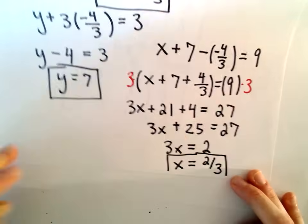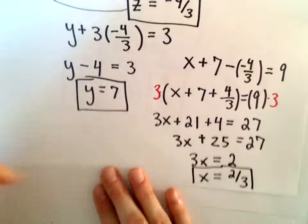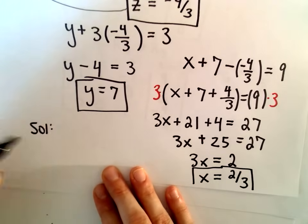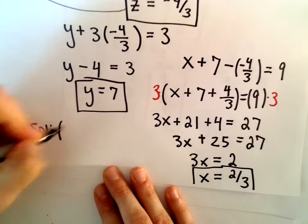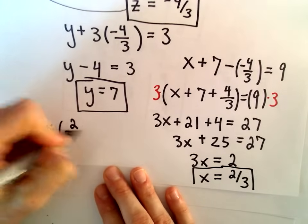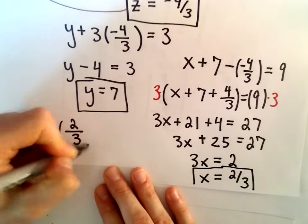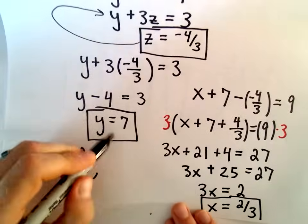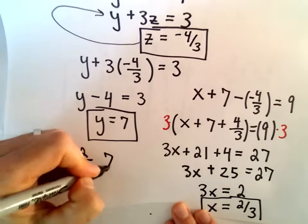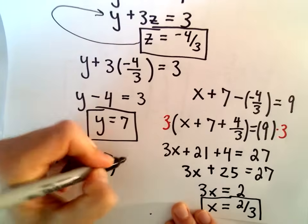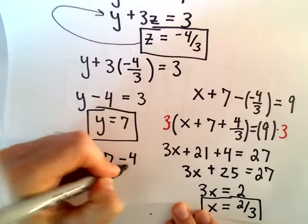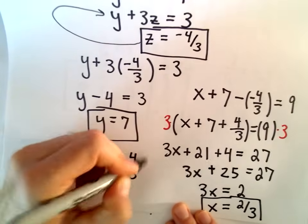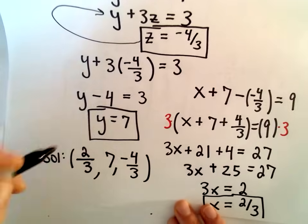So now we've got our solution. The solution to the system of equations is: x equals 2 thirds, y equals 7, and z equals negative 4 thirds.